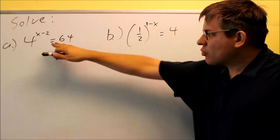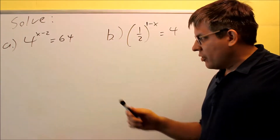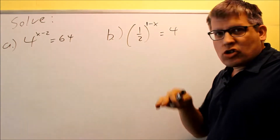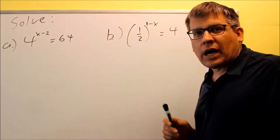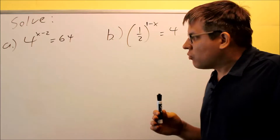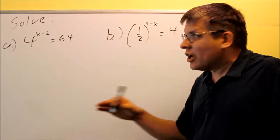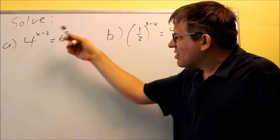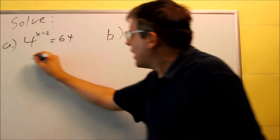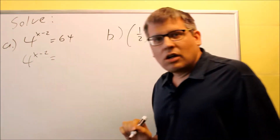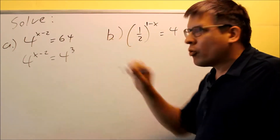For this problem I have a 4 and I have 64. We need to get both of these to be the same base. Starting with the 4 that's already there, if I can write 64 as a power of 4 I'll do that. If not, I might need to break it down to a base of 2. Since 64 can be written as a power of 4, on one side I have 4 to the x minus 2, and on the other side I change 64 to 4 cubed, because 4 times 4 times 4 equals 64.